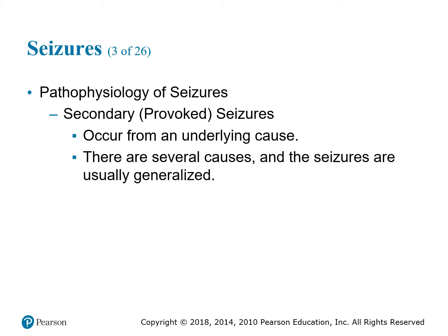Secondary seizures are caused by something else — there is an underlying cause. Whether it's trauma, like a skateboarder who falls and hits his head and then starts to convulse, or a fever — a two-year-old with a 105 or 106 fever who starts seizing. There is a cause to that seizure, and we treat the cause. Secondary seizures are more than likely going to be a generalized type seizure.